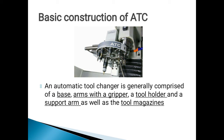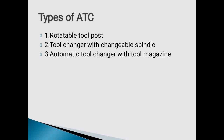Now let's look at the basic construction of ATC. An Automatic Tool Changer is generally comprised of a base, arms with gripper, a tool holder, a support arm, as well as a tool magazine.